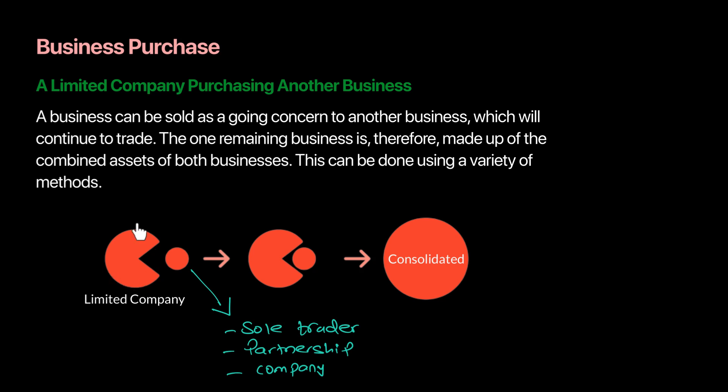We have one company — we can call this the buyer — and the other will be the seller. They will eventually consolidate to become a large company, and our job is to understand the accounting process: how to record this in our accounting books.